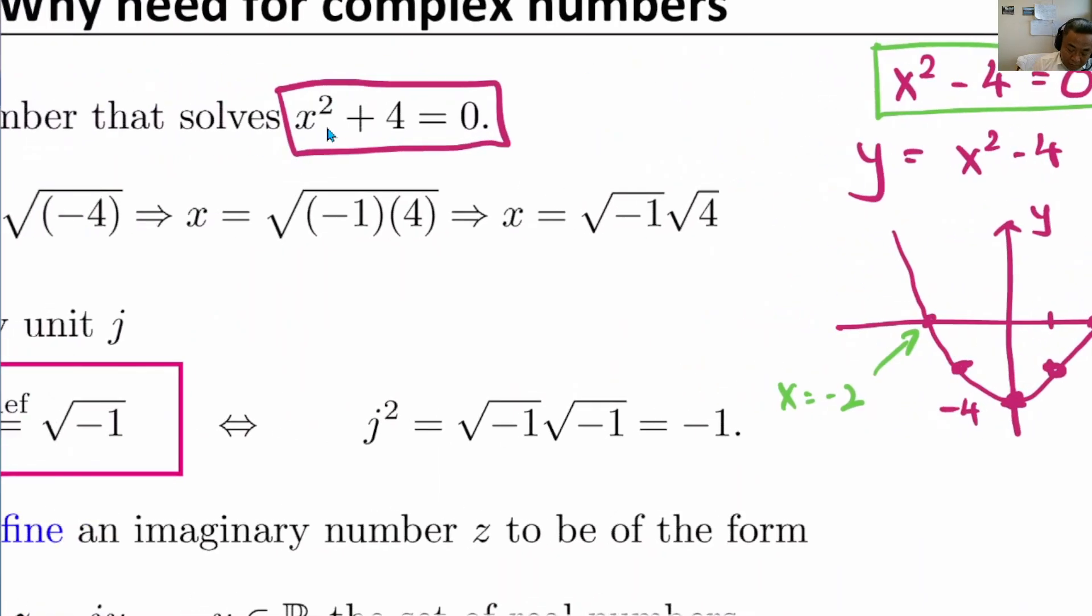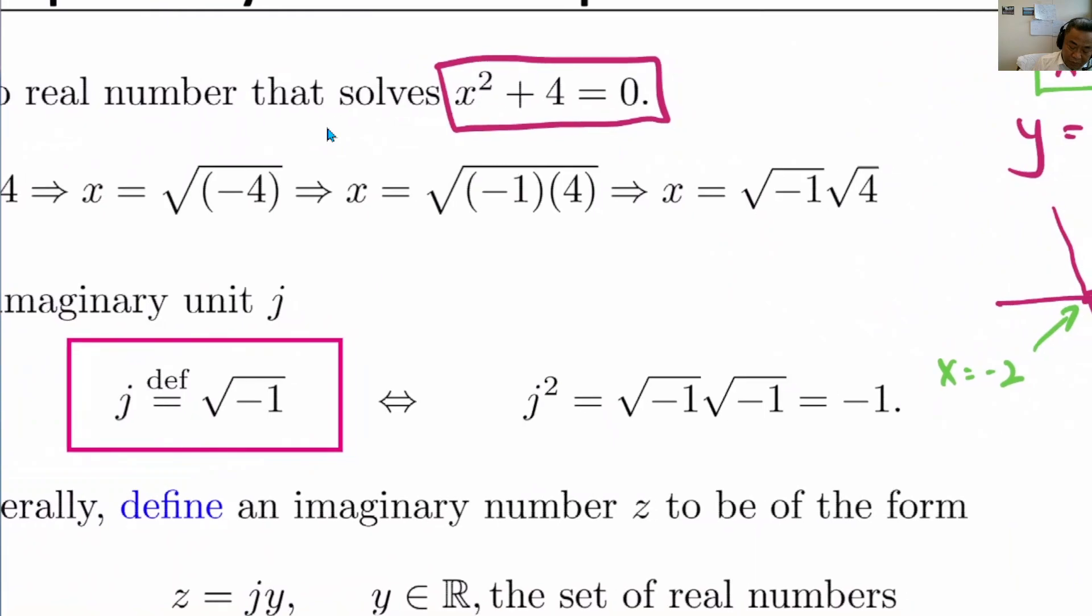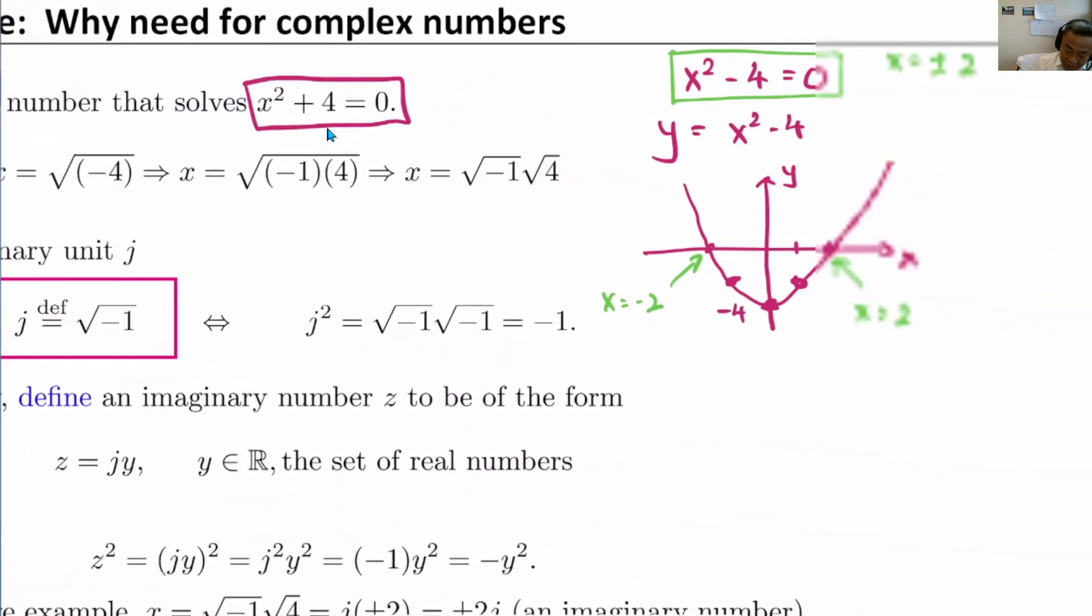Then you realize that, well, when we solve for x squared plus 4, now we draw this curve and you realize that, well, when x is 0, y is already 4. So you realize that the curve, this is y equals x squared plus 4, because when x is 0, y is already 4.